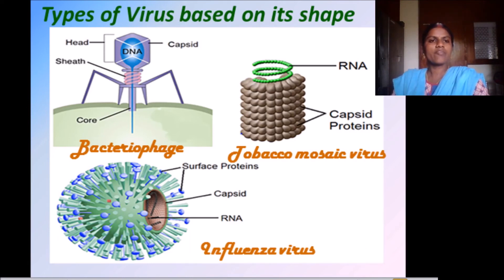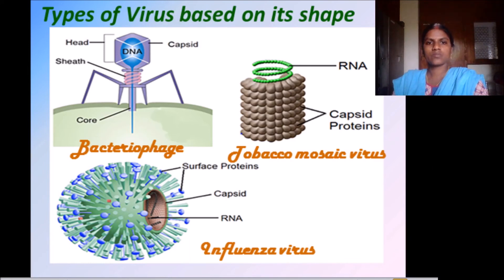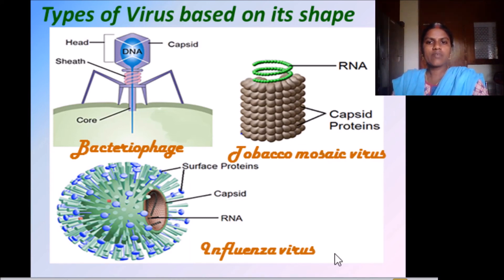The bacteriophage virus has a complex structure — it has a tetrahedral head. Tobacco mosaic virus has a helical shape. And the influenza virus is a spherical-shaped virus.